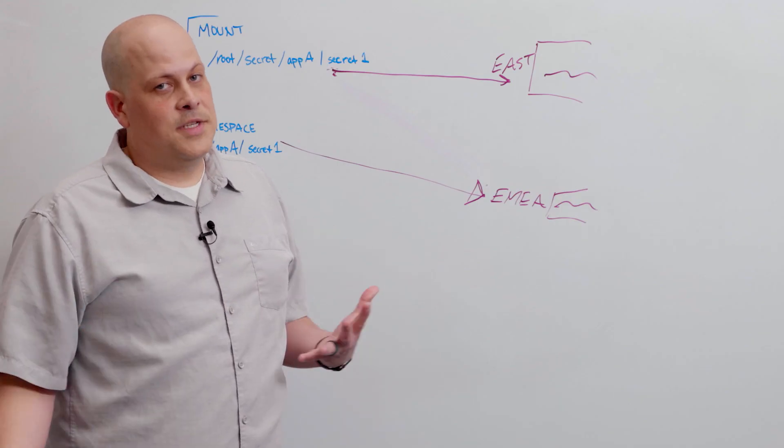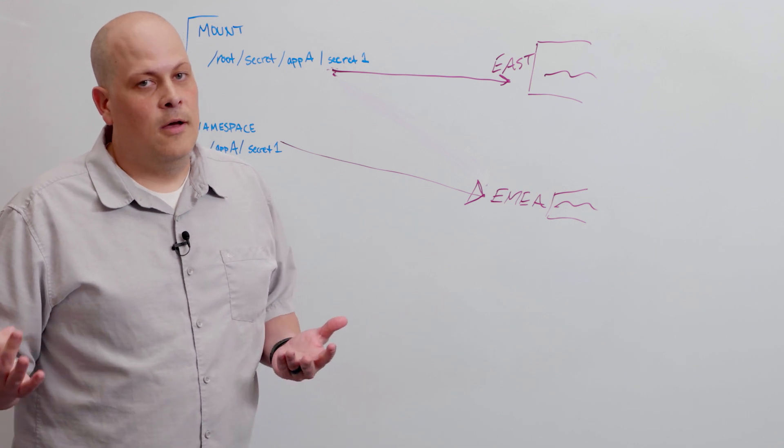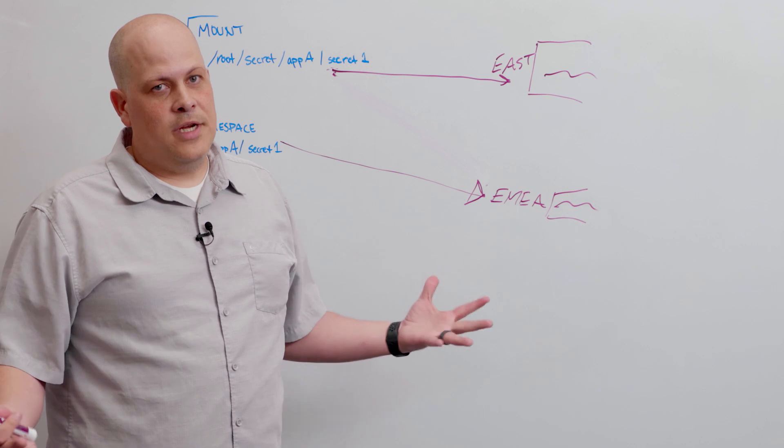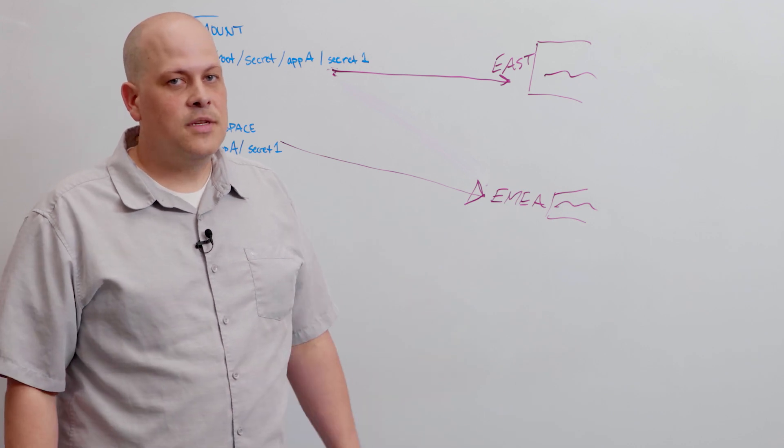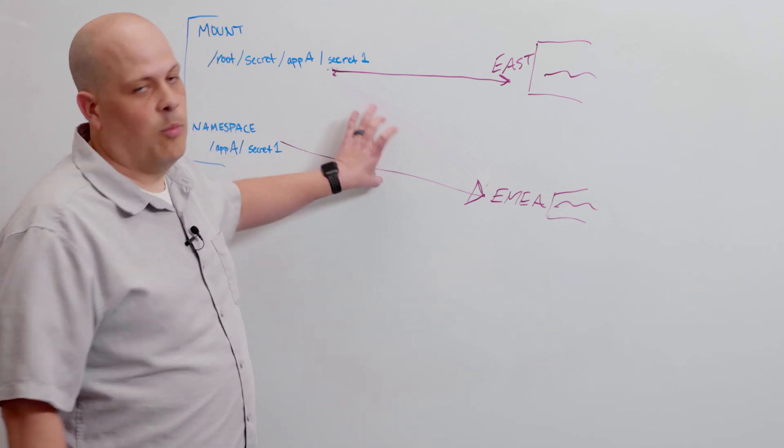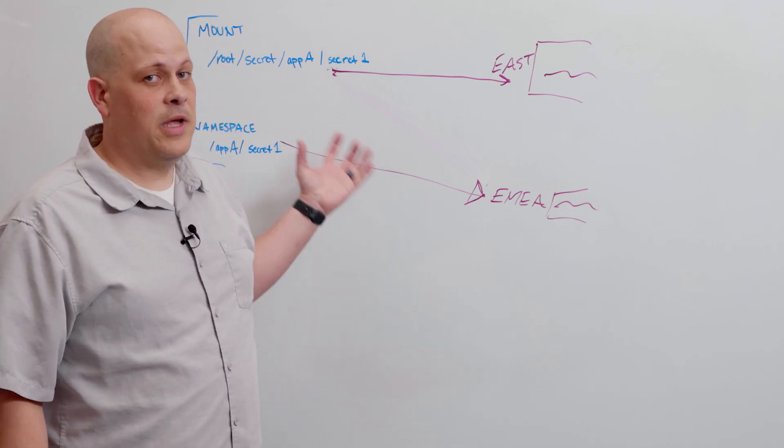Mount filtering has existed in Vault for quite a while now, which is great in a general sense when you're managing a general group of secrets. What's coming new in an upcoming version of Vault is the ability to apply those mount filters to namespaces.